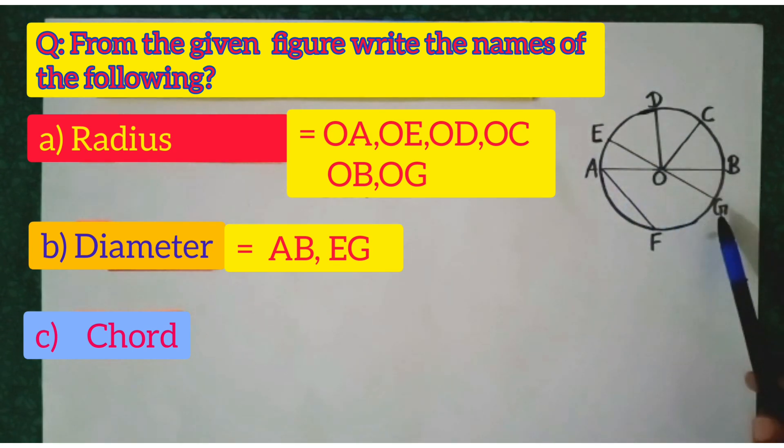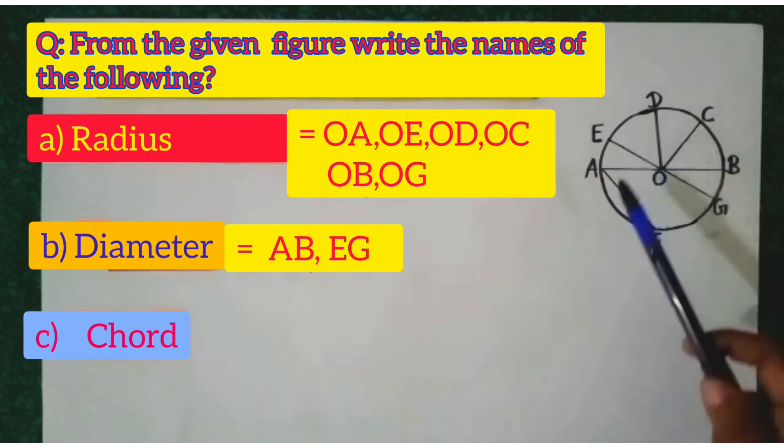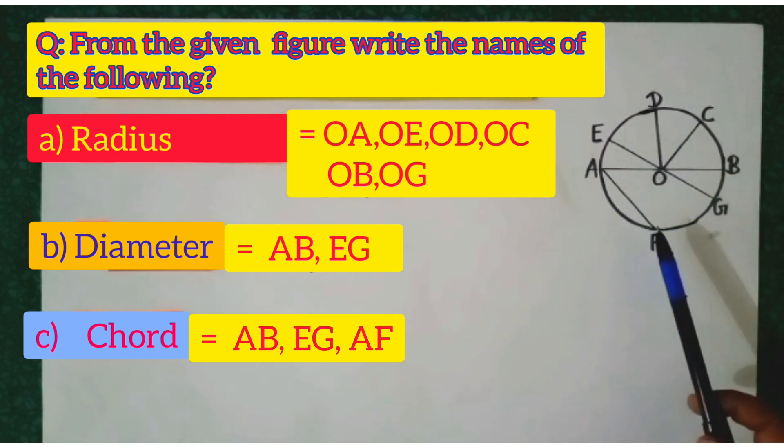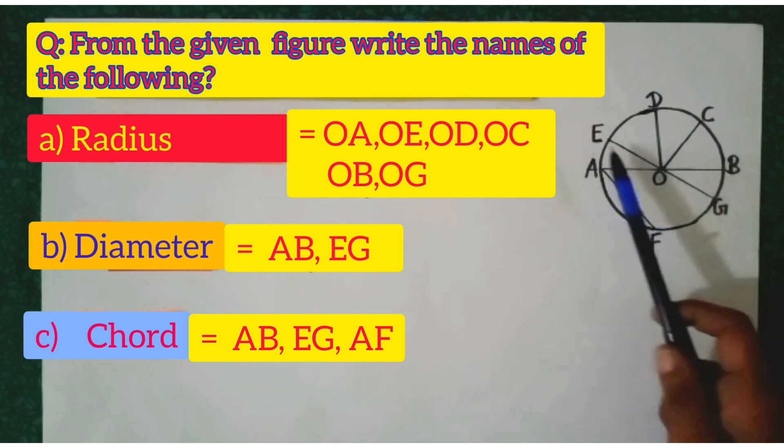Next, find chord and in given circle which are chords. It's AB, EG and AF.